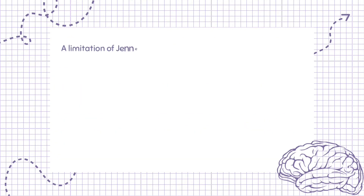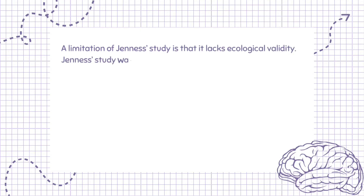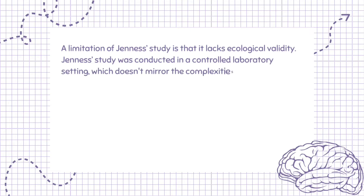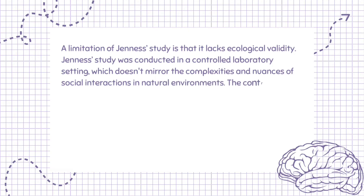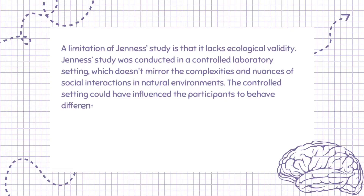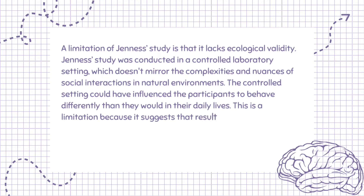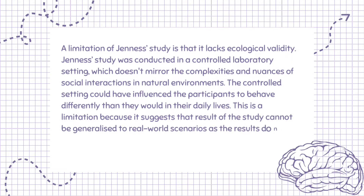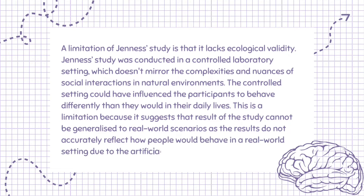A limitation of Jeunesse's study is that it lacks ecological validity. Jeunesse's study was conducted in a controlled laboratory setting, which doesn't mirror the complexities and nuances of social interactions in natural environments. The controlled setting could have influenced the participants to behave differently than they would in their daily lives. This is a limitation because it suggests that the results of the study cannot be generalized to real-world scenarios, as they do not accurately reflect how people would behave in a real-world setting due to the artificial nature of the environment.